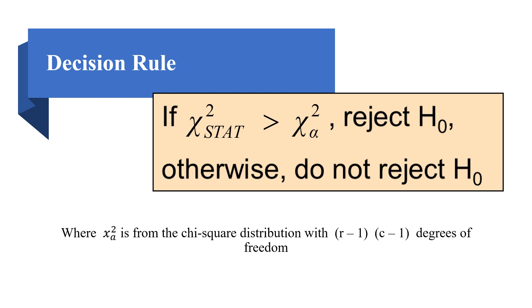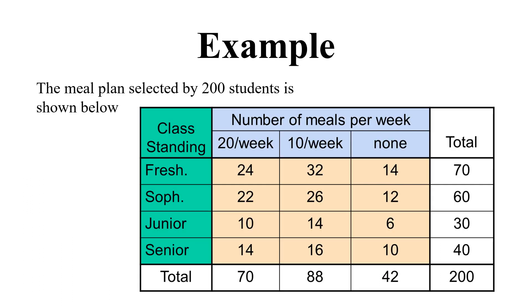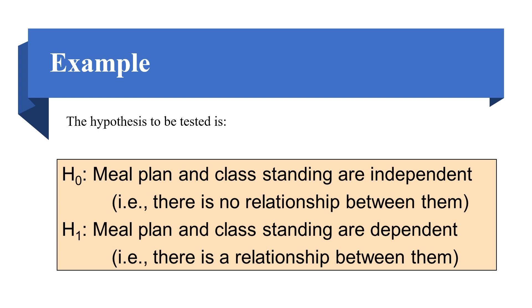Let's look at a new example. We have a contingency table of class standing versus number of meals per week. The meal plan is selected by 200 students in total. We start with the contingency table of observed frequencies.